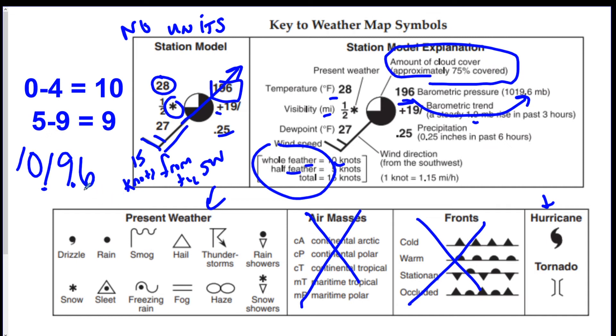So if they say to put pressure on a station model, you got to only use the last three numbers and take away the decimal point. So it would just be one nine six.